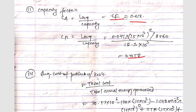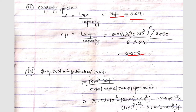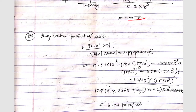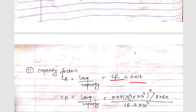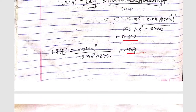The average cost of production per kilowatt hour equals total cost divided by total annual energy generated. Total cost = CA + CB, substituting the value of X. Total annual energy generated is the area from the load-duration figure.